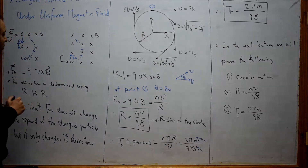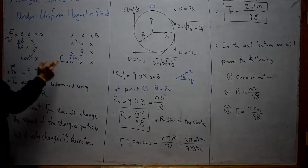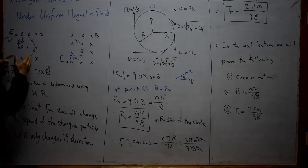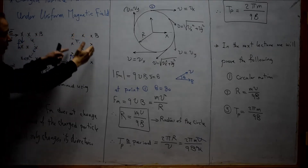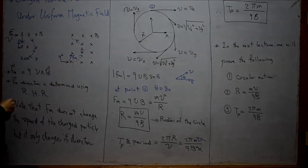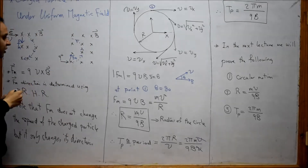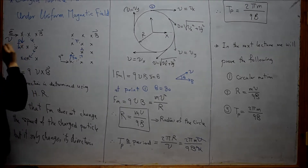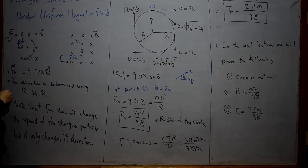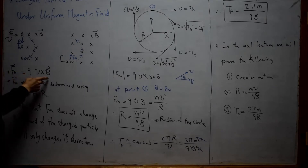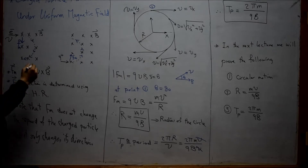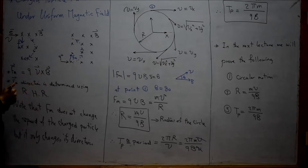If we have a charged particle — whether it's an electron, a negative electron, or a positive proton — and it is under a region of a magnetic field B, this magnetic field will exert a magnetic force on this charged particle. This magnetic force can be calculated using the law F = qV cross B, the cross product of the velocity of the charged particle and the magnetic field vector.